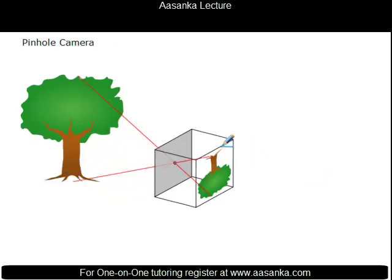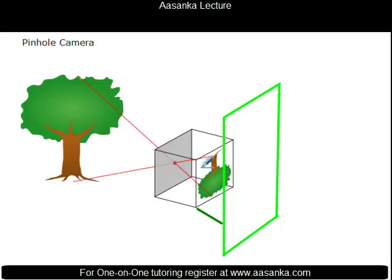Now, the important thing is that if you shift the screen a little back — say by some distance — and make a bigger screen, then the rays which were meeting at the original position will travel a greater distance and meet the new screen at wider points. You will have a larger-size image of the object.